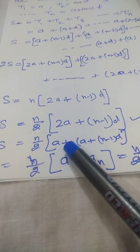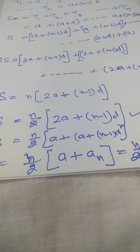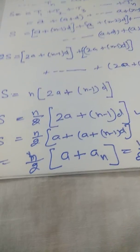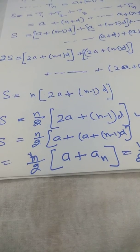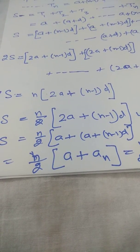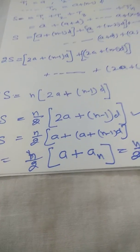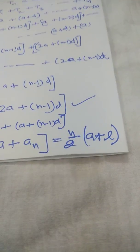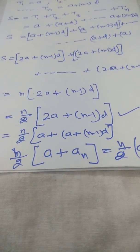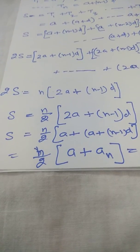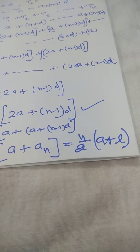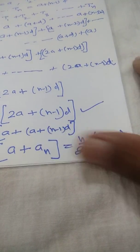Now 2a can be written as a + a, and a + (n-1)d is the nth term, which is the last term l. So another formula is: Sn = n/2 × (a + l). We have two formulas — first: Sn = n/2 × [2a + (n-1)d], and second: Sn = n/2 × (a + l).